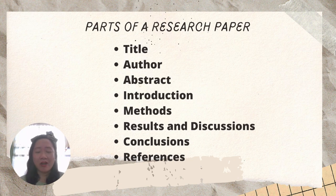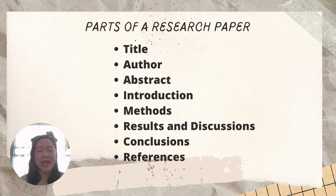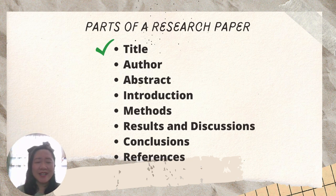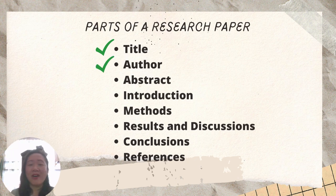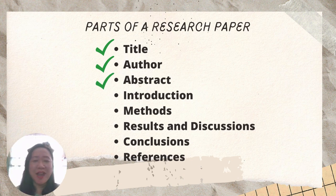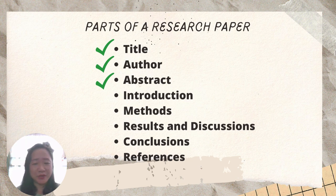We have the title, author, abstract, introduction, methods, results and discussions, conclusions, and references. In our previous video, we discussed already the title, which is written on top of the research paper, author, which is written below the title, and abstract. If you missed our video about writing the abstract in your research paper, you can always go back so that you can follow our discussion for today.